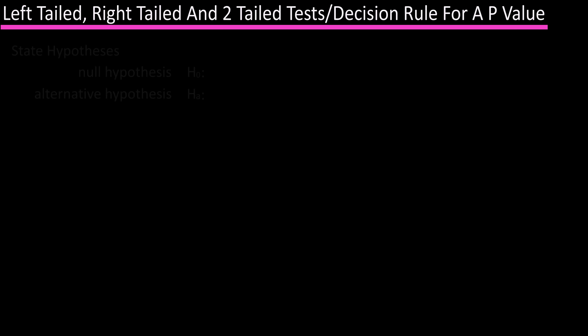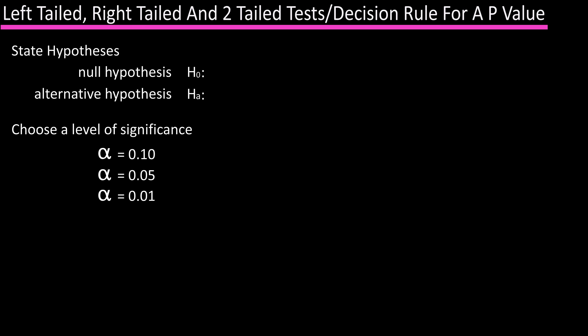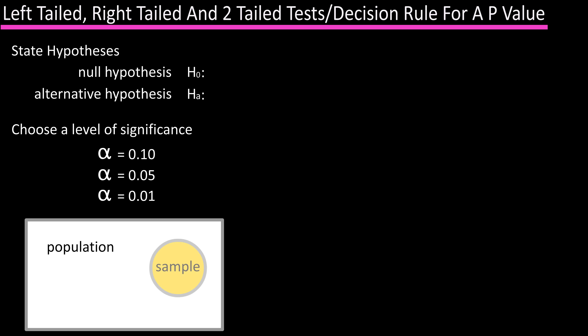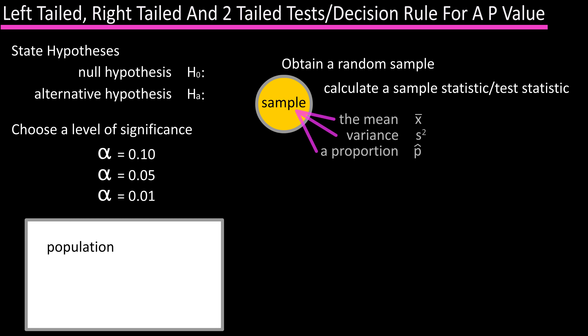In hypothesis testing, after stating the null and alternative hypotheses and choosing a level of significance, next you would obtain a random sample from the population and calculate a sample statistic, which is called a test statistic, such as the mean x-bar, the variance s-squared, or the proportion p-hat.